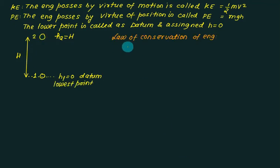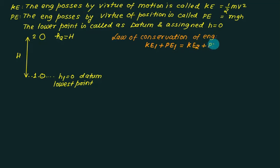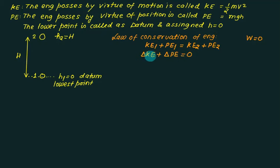By the law of conservation of energy, energy is neither created nor destroyed, but always transforms from one form to another. The sum of kinetic energy plus potential energy at the initial condition equals kinetic energy plus potential energy at the final condition. When applying this law, work is assumed to be zero, so delta KE plus delta PE equals zero — that is, final minus initial for each term equals zero; energy remains constant.